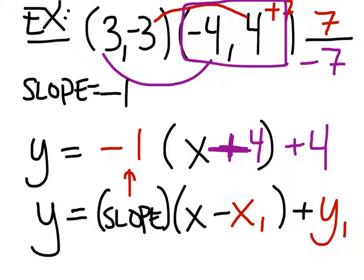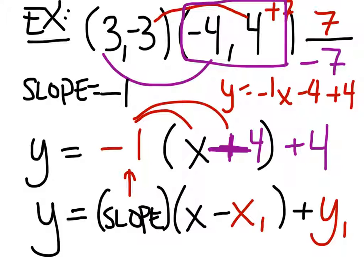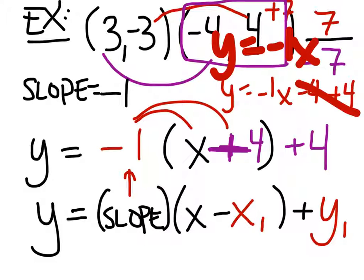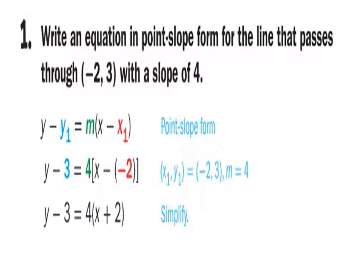Could we find the Y-intercept from this? Sure. All we're going to do is distribute this negative 1. So, now we've got Y equals -1X minus 4 plus 4. And if I were to write this completely in slope-intercept form, Y equals -1X. Very good. You'd get Y equals -1X. These two, -4 plus 4 is 0. So, this would be your slope-intercept form.